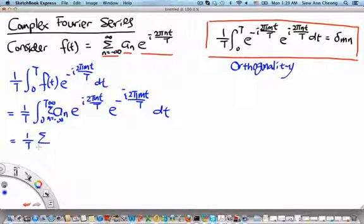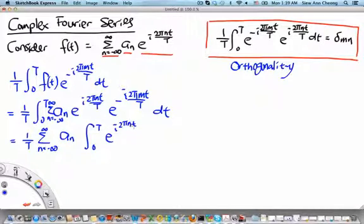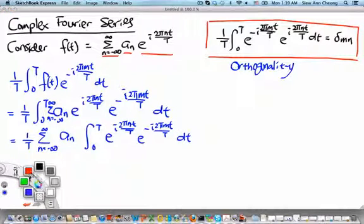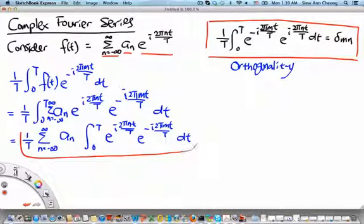Let us change the order of the summation and integration. And since a_n is summed over but not integrated over, let's bring it out. So we have a_n and then an integral from 0 to T of e^(i 2π nt/T) times e^(-i 2π mt/T) dt. If we make use of the orthogonality relation, which is this part here.